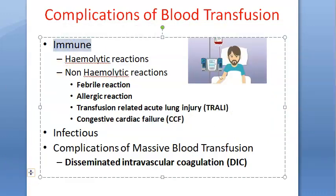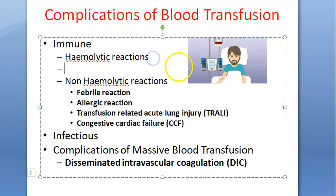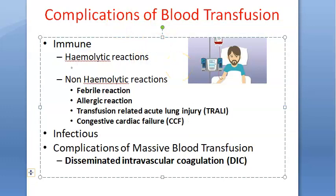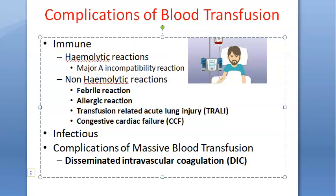Let us look at the immune reactions. Under this we have hemolytic reactions - that is, lysis of RBCs. Major incompatibility reaction is because of ABO mismatch. Here they give mismatched blood due to technical error, sampling, labeling, or dispatching problems, which can lead to intravascular hemolysis.